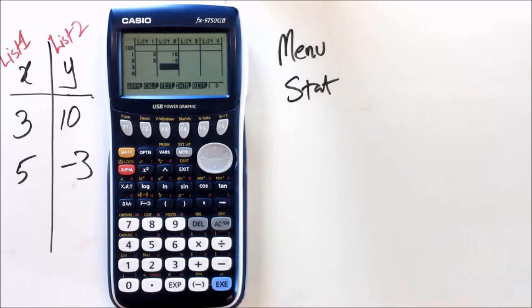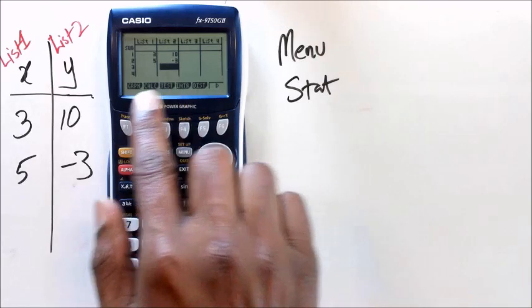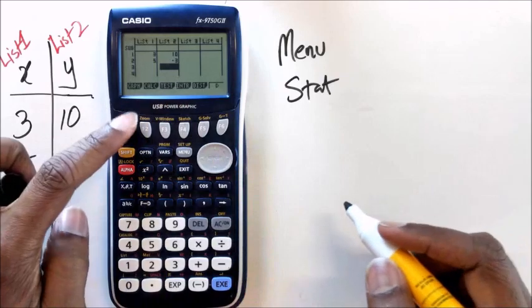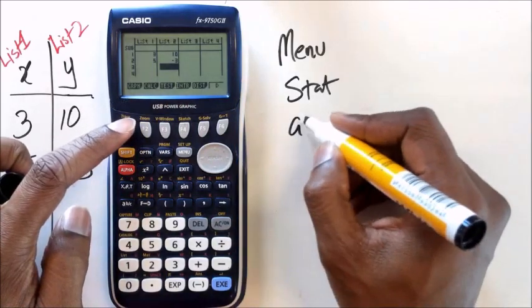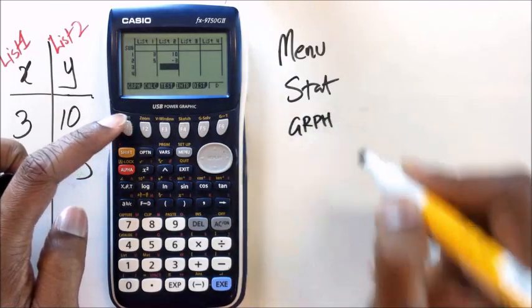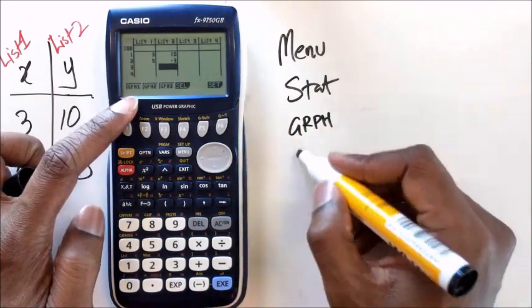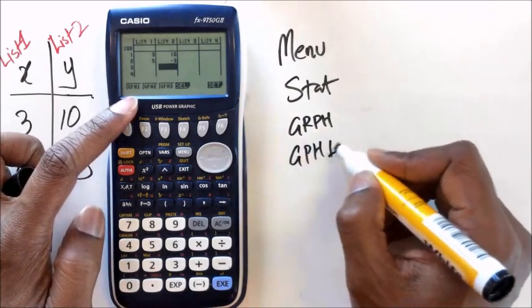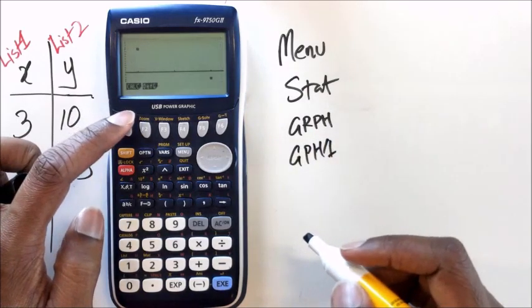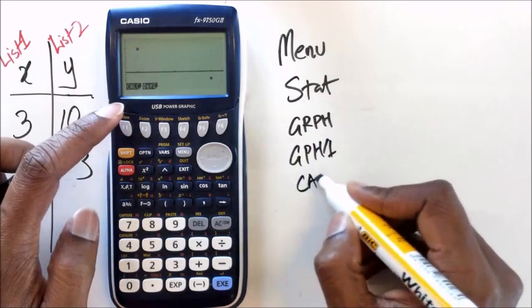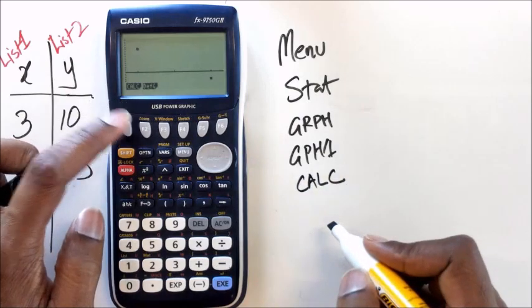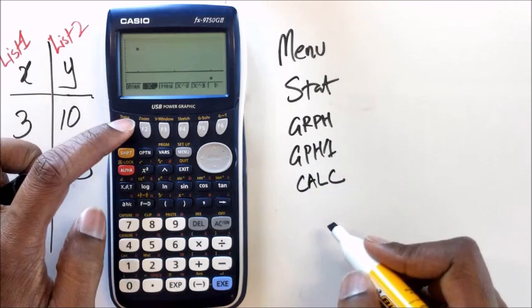So how do we calculate the equation of a straight line from this? What you want to be doing is press F1 which is the graph, once you click that you can click on gph1 which is just graph 1 and you should see a picture that looks like this.